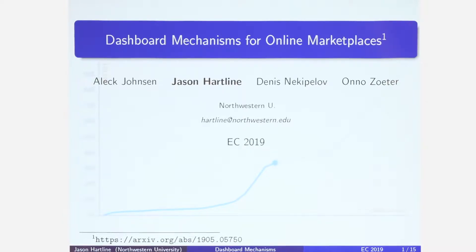Here's the eventual theorem: there exists a dashboard such that if we are in a setting where agents interact repeatedly as long-lived participants, the sequential dashboard mechanism is approximately strategically equivalent to the sequential truthful mechanism with the same allocation algorithm. Any equilibrium or approximate equilibrium found in a sequential truthful mechanism has a corresponding approximate equilibrium in the dashboard mechanism, and vice versa — you can go back and forth with the same properties.